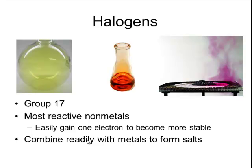The halogens at the top of the periodic table are gases, but as you move down the halogen group they become more dense. So chlorine is a gas, whereas bromine — shown here in the middle — is a brownish liquid, whereas iodine is a purple crystalline solid.